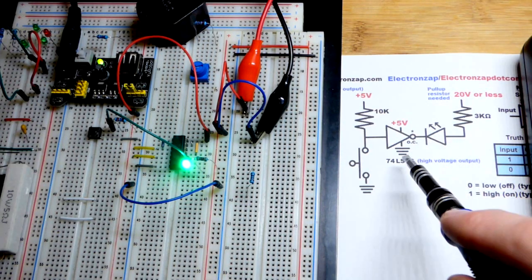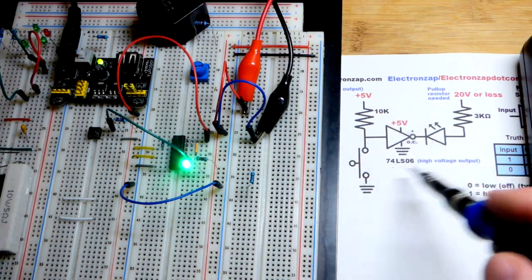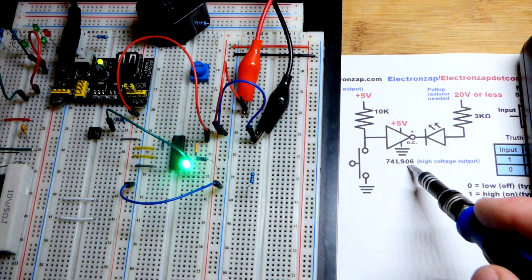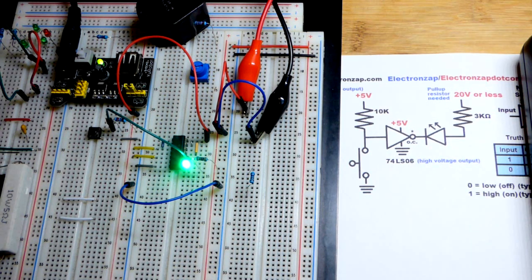So now in this video we're going to look at this circuit that I have on the board. There is the schematic. The main thing is we're using the 7406-74LS06.